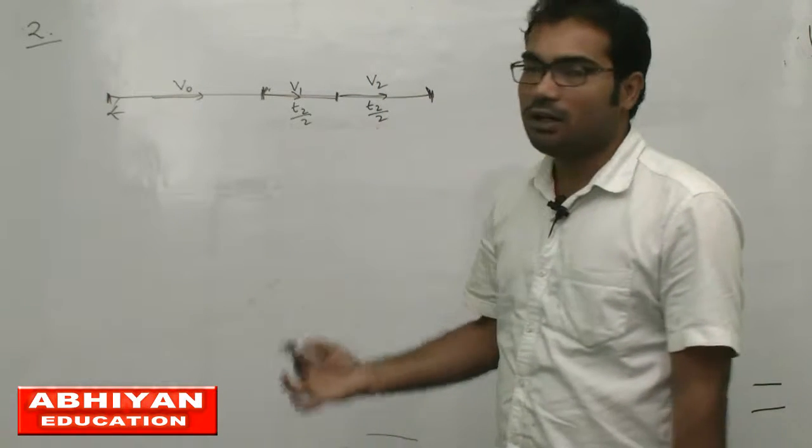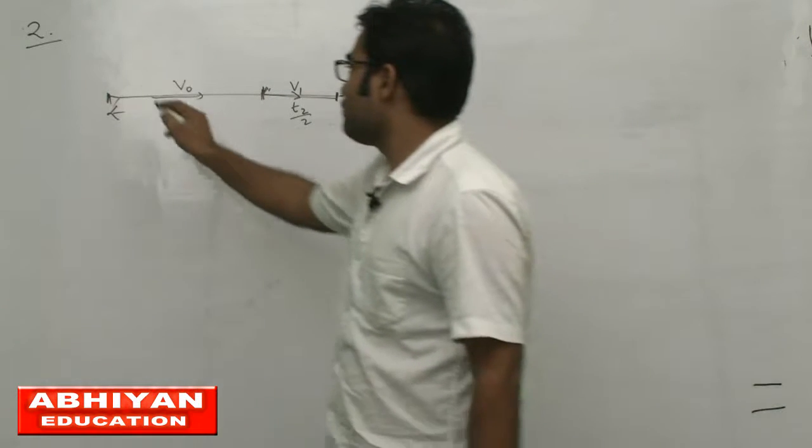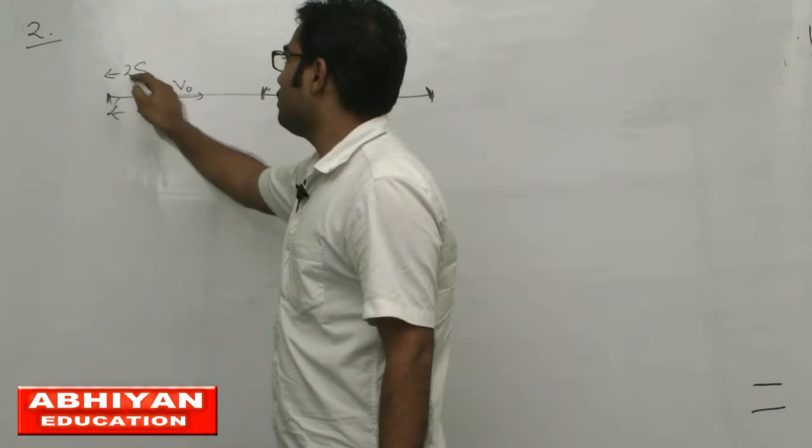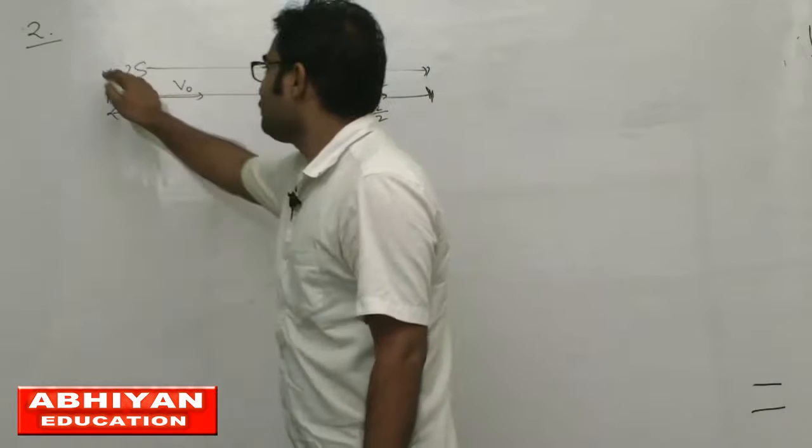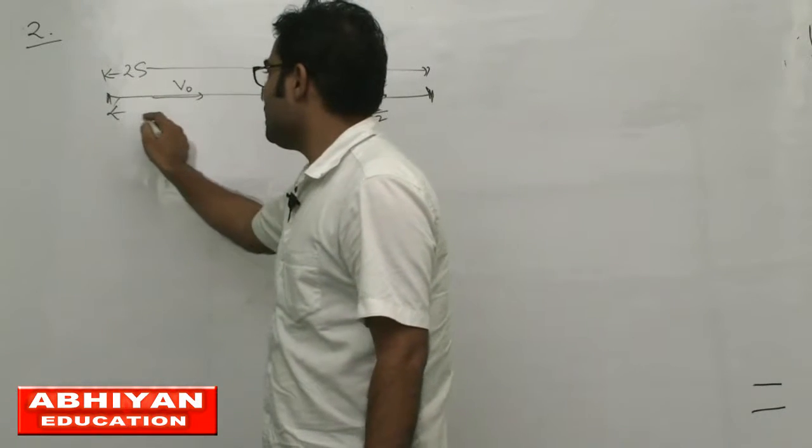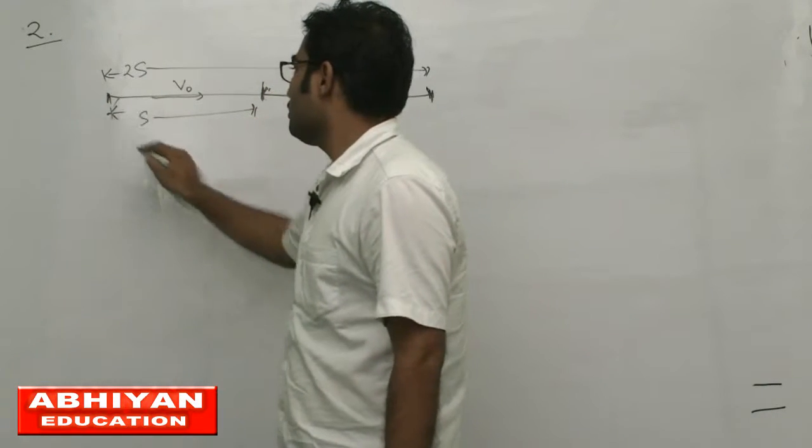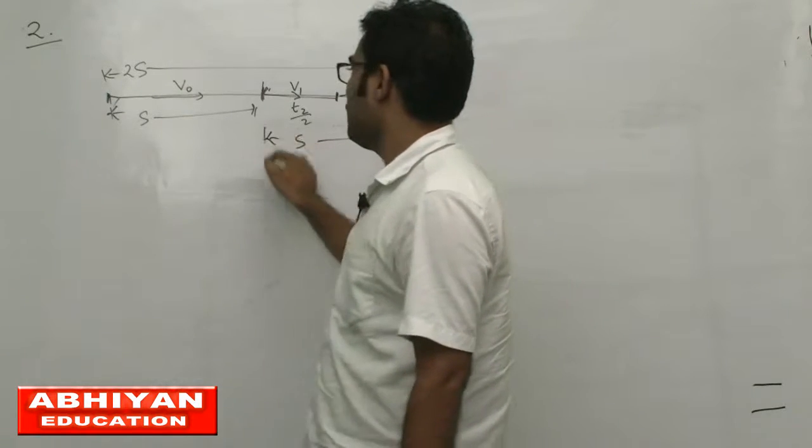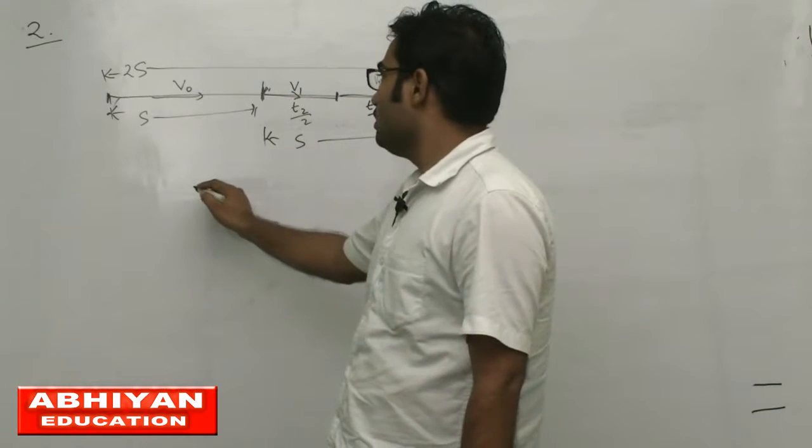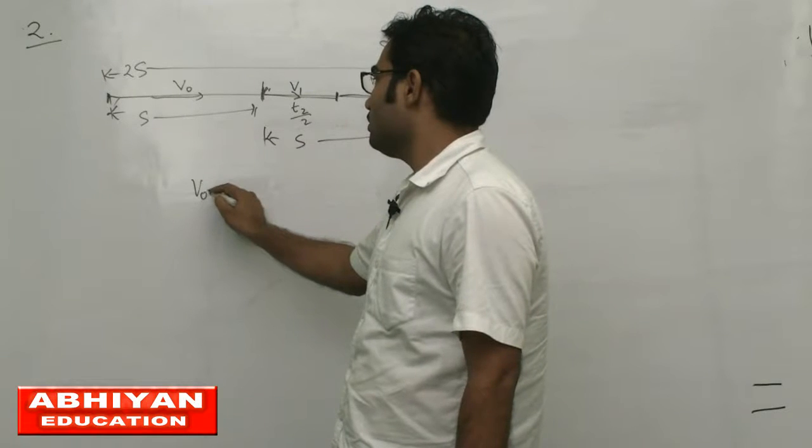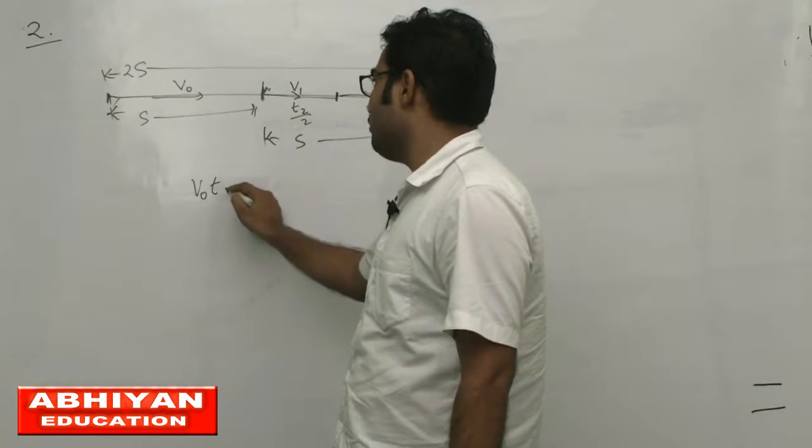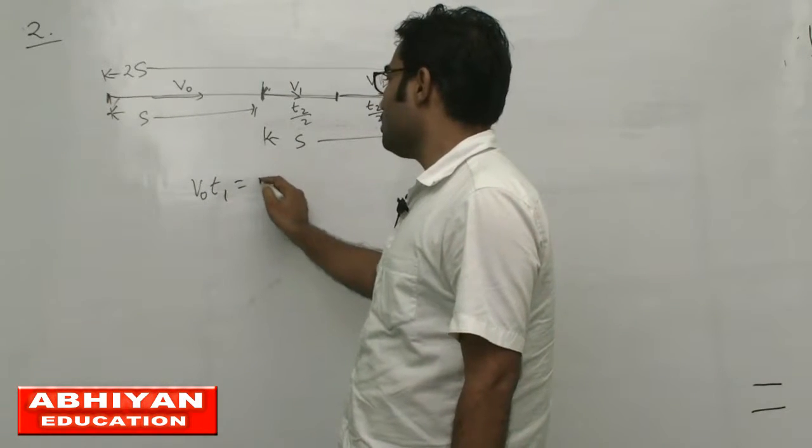We need to calculate the average velocity, which is total displacement divided by total time. Suppose that the total distance is 2s. So from here to here is distance s, and here to here is distance s.